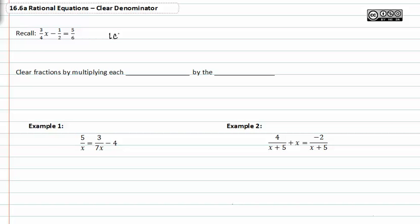Your LCD in this particular problem is twelve. Once you've found your LCD, you need to multiply each term in your equation by that number.